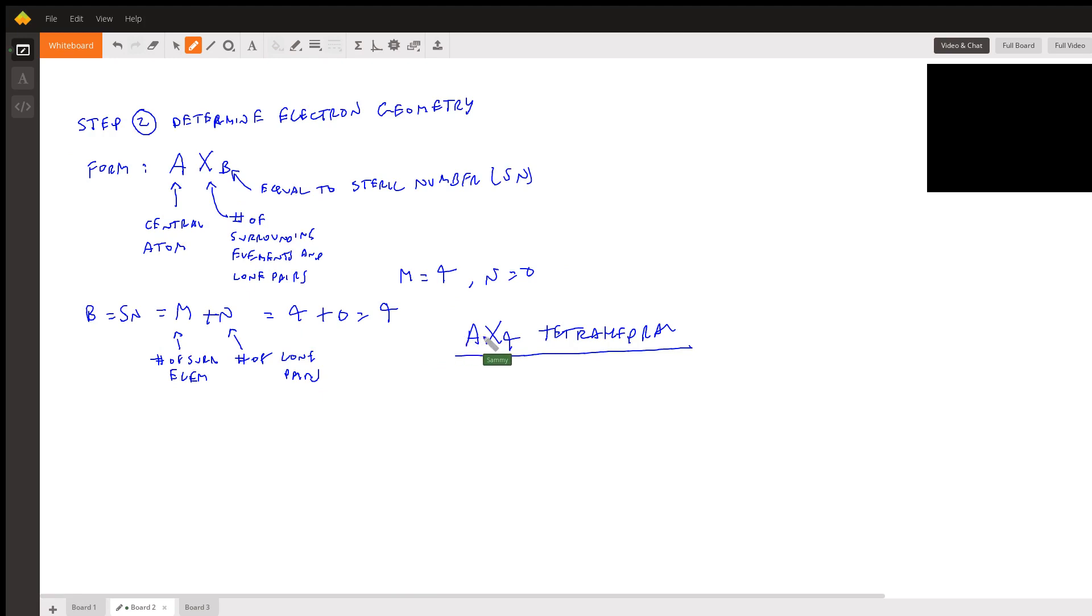So the form would be AX4, which is tetrahedral. So that's the electron geometry, tetrahedral.